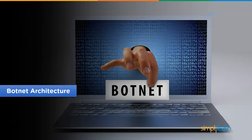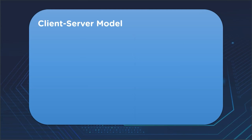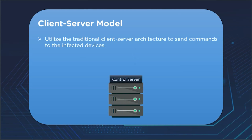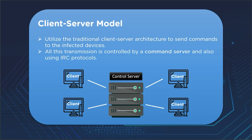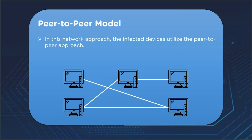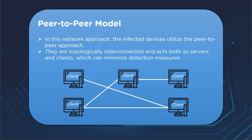Now let's take a look at botnet architecture. The first type is the client-server model, a traditional model that operates with the help of a command and control center, server, and communication protocols like IRC. When the bot order issues a command to the server, it is relayed to the client to perform malicious actions. Then we have the peer-to-peer model, where controlling infected bots involves a decentralized peer-to-peer network. The bots are topologically interconnected and act as both command-and-control servers and clients. Hackers adopt this approach today to avoid detection and single point failure.